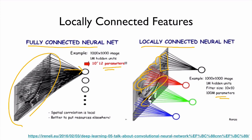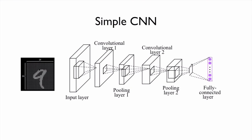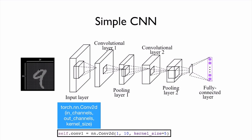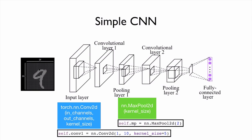Let's implement this. In our example, we'll use the MNIST dataset with two convolutional layers and one fully connected layer. For the convolutional layer, we use the Conv2D API, which takes in_channels, out_channels, and kernel_size. The MNIST image has one color channel, so in_channels is 1. We choose 10 out_channels and kernel size 5. Max pooling is even simpler — we just provide the kernel size. The fully connected layer is exactly like our softmax classifier.